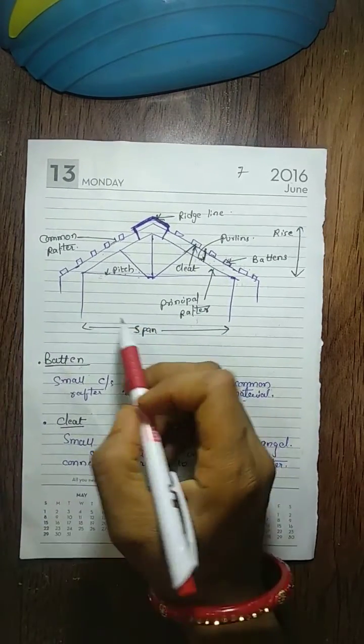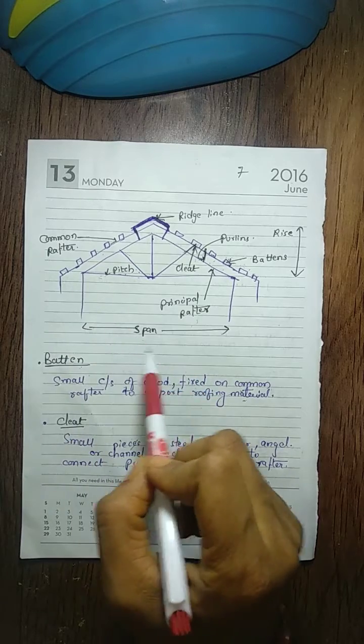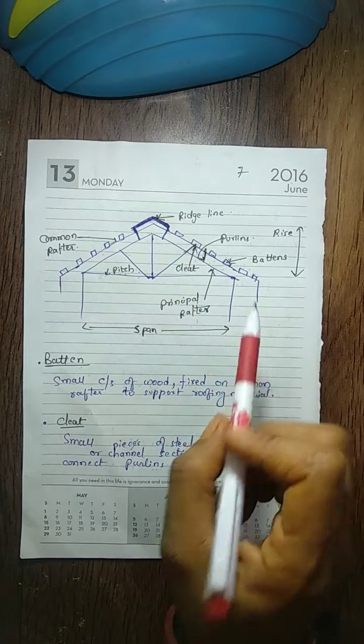The next diagram shows the different technical terms which should be common rafter span, principal rafter, cleat, ridge line, perlin, battens, etc.